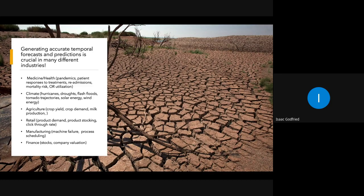On health, there's a ton of things that could be done — patient responses to treatments over time, readmissions to hospitals, operating room utilization. Things like in agriculture: crop yield, crop demand, milk production. Tons of stuff in retail — one of our big things was forecasting demand for specific product SKUs to be able to determine hourly stocking. Manufacturing, finance — basically almost every kind of industry or group, there's probably some need for models that can really forecast and predict temporal trends very well.